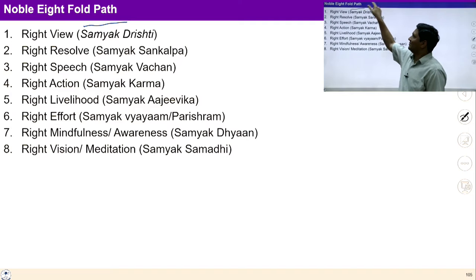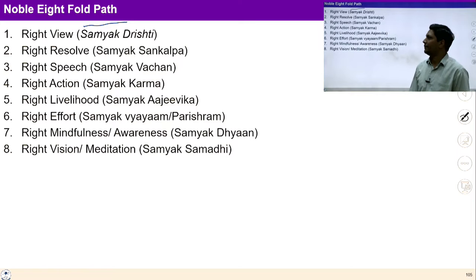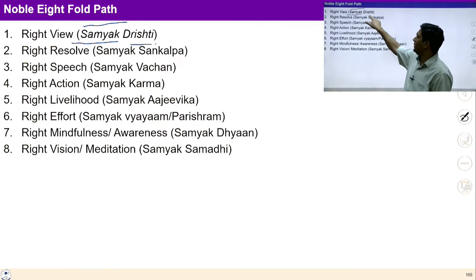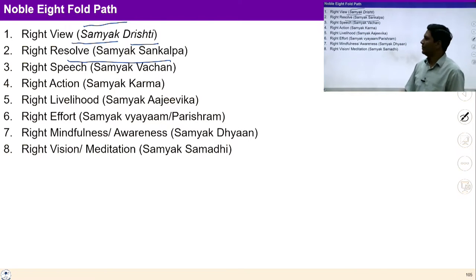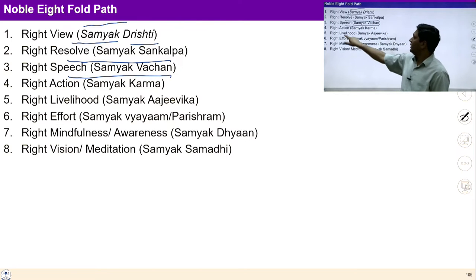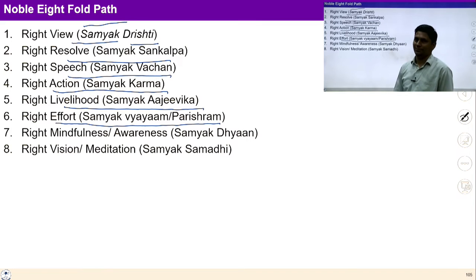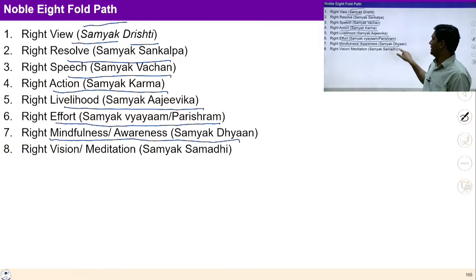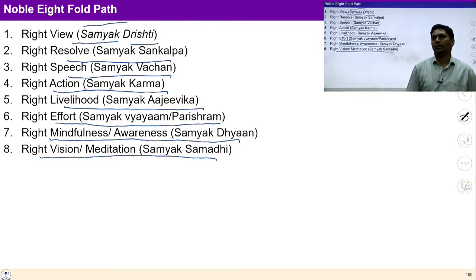The Noble Eightfold Path has eight steps: number one, Right View — Samyak Drishti; next is Right Resolve — Samyak Sankalp; Right Speech — Samyak Vachan; Right Action — Samyak Karma; Right Livelihood — Samyak Ajivika; Right Effort — Samyak Parishram; Right Mindfulness and Awareness — Samyak Dhyan; and the last is Right Vision, Meditation — Samyak Samadhi. We will study these eight steps and see how they help ensure harmony in relationships.